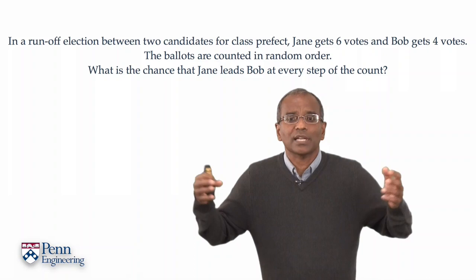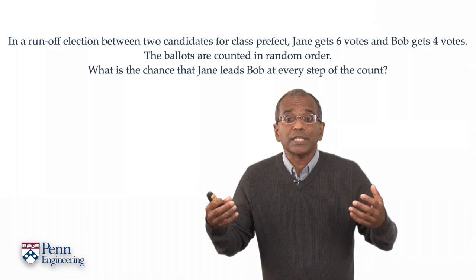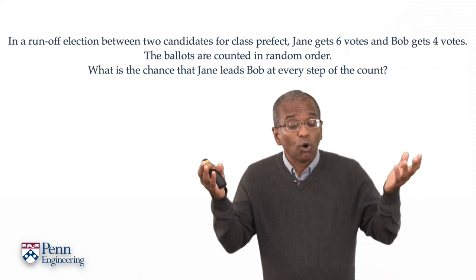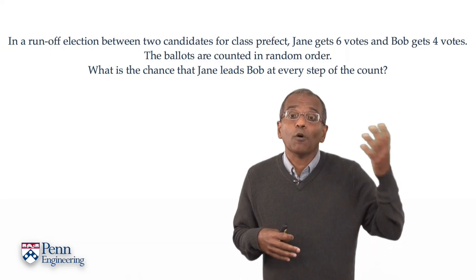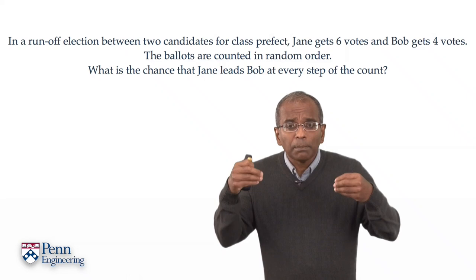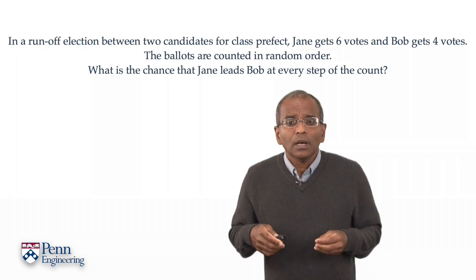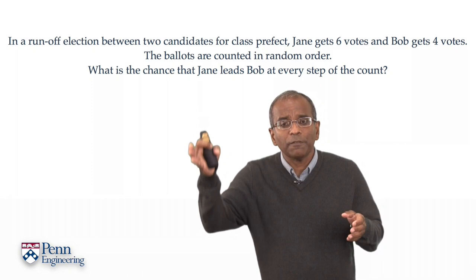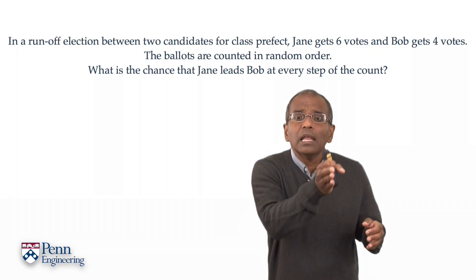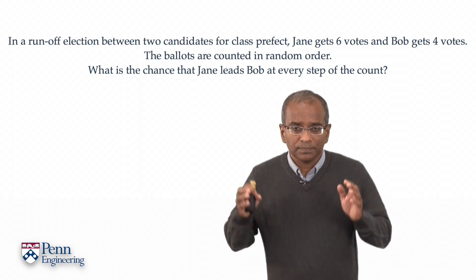Imagine that you have a class election with 10 students, and there are two protagonists competing for the role of class prefect — call them Jane and Bob. Jane picks up six votes, Bob picks up four votes, so Jane wins the election. Imagine that the ballots are counted in some random order. What are the chances that Jane leads at every step of this process?